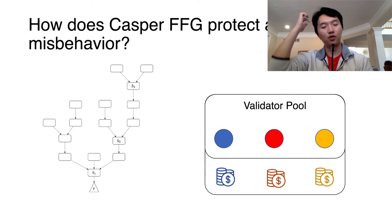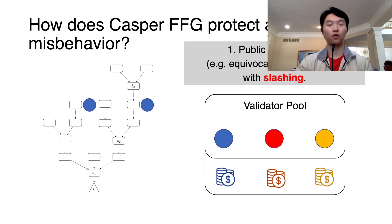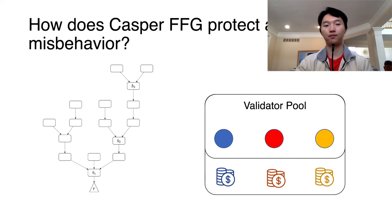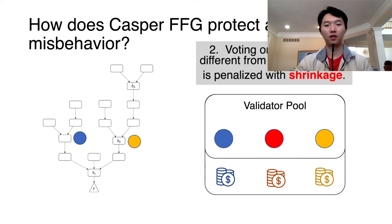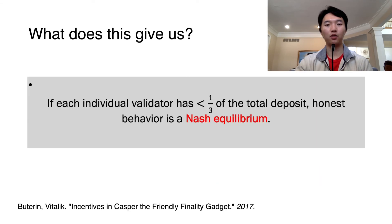With new parties introduced to the protocol, there is a need to incentivize proper behavior. How does Casper FFG protect against misbehaving validators? First, if a validator votes for two different blocks, which is called equivocating, then its stake is slashed. Second, if a validator does not vote for the justified block, then the validator's stake is also penalized. Here, the blue validator voted for a block that was not decided to be the justified block, so it got stake penalized. It has been shown that honest behavior among validators is a Nash equilibrium if each validator has less than a third of the total deposit.